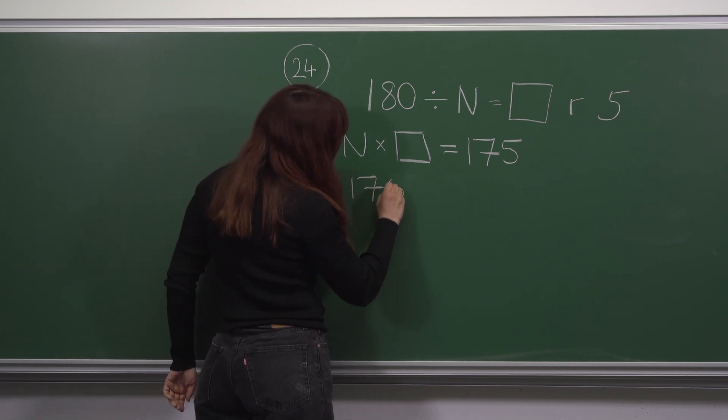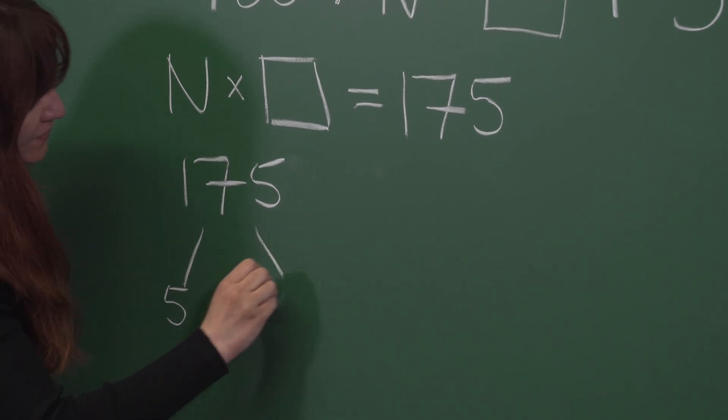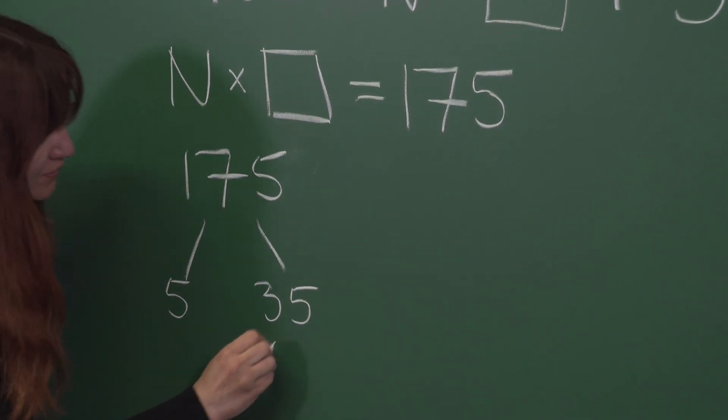175 is divisible by 5, it is 5 times 35, and 35 is, of course, 5 times 7.